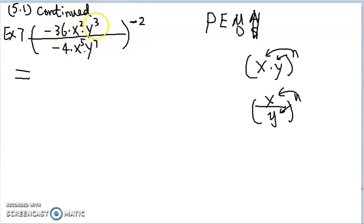To negative 36, to x squared, to y cubed, to negative 4, to x fifth, to y to 7. But that's a lot of work. We've got to do that like six times.